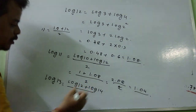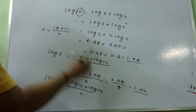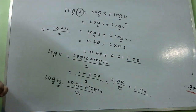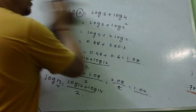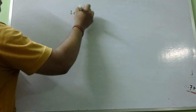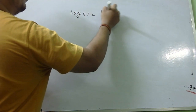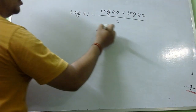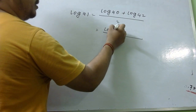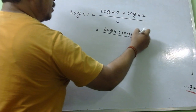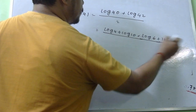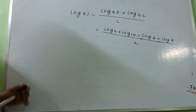For log 13, we average log 12 and log 14: (log 12 plus log 14) divided by 2. Log 12 equals log 3 plus log 4; log 14 equals log 2 plus log 7. For log 41, we take (log 40 plus log 42) divided by 2.